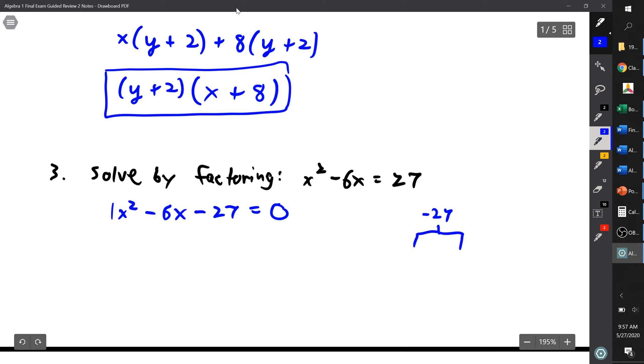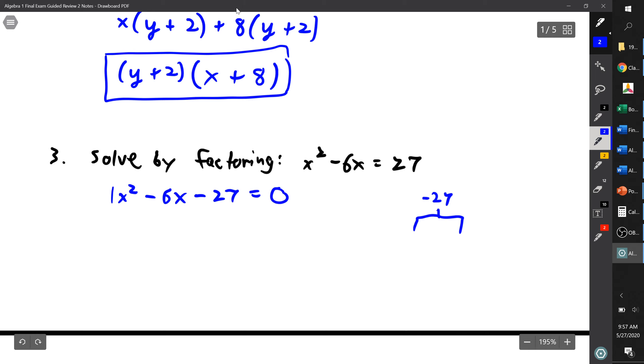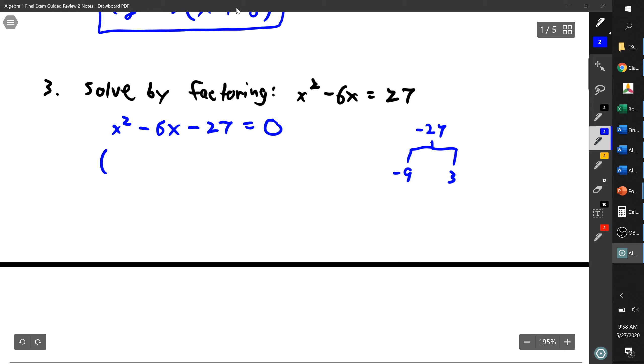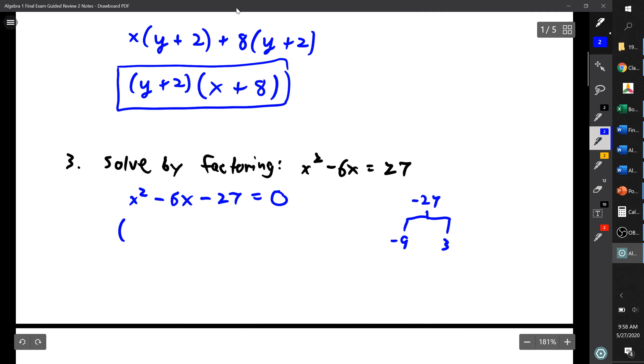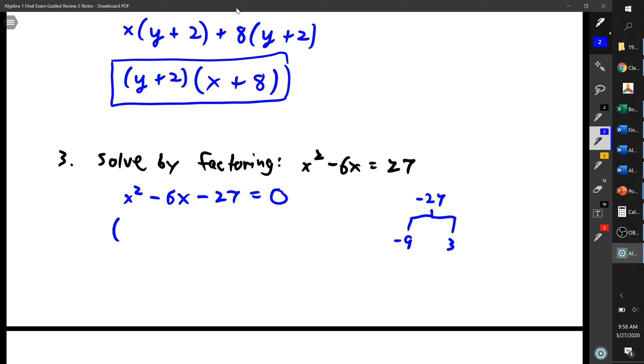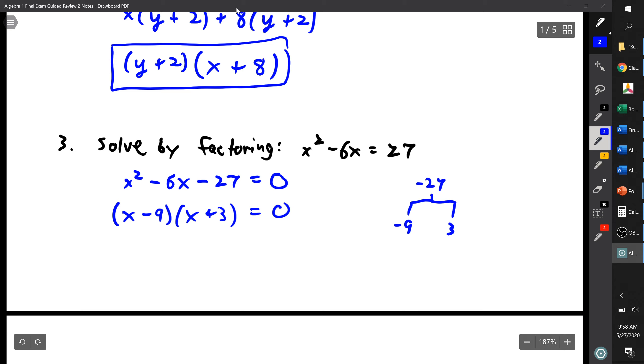Well, let's see, 27 is 9 times 3. I want them to add to be a negative number, so I can do a negative 9 times a positive 3. Negative 9 times positive 3 is negative 27, negative 9 plus 3 is negative 6. And because this is a 1x squared problem, I can use these numbers directly in and go x minus 9 times x plus 3 equals 0.